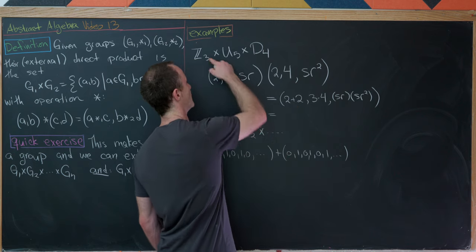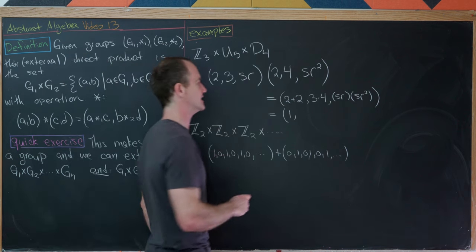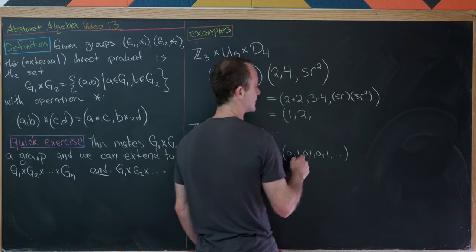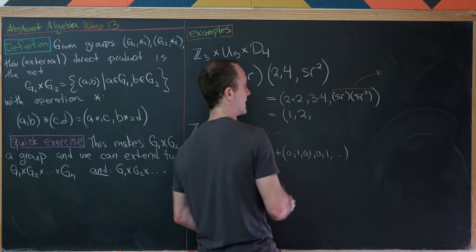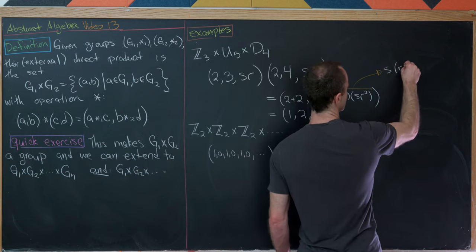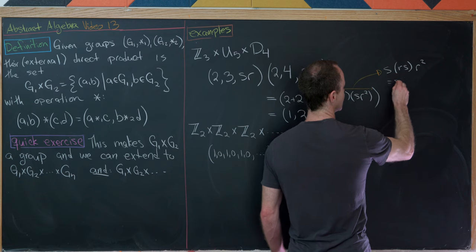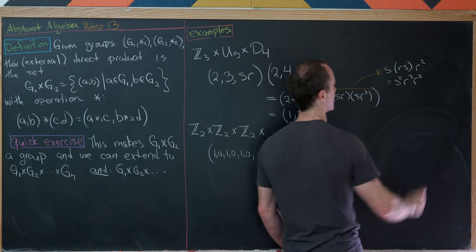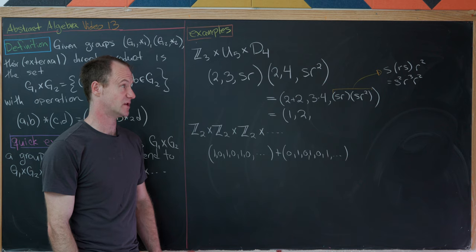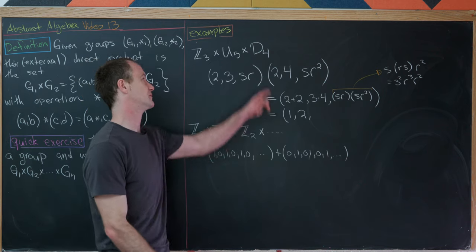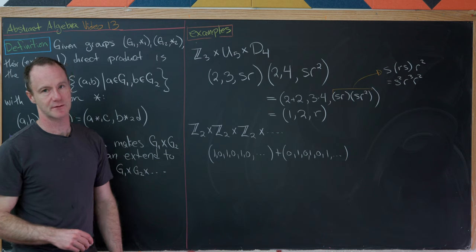Now let's simplify: 2+2 = 4, but inside Z3 that is 1. Then 3×4 = 12, but inside U5 that is 2. For the D4 entry, srsr² reassociates, and we flip r past s using the commutation rule to get s²r³r². Since s² is the identity and r³r² = r⁵ = r in D4, the result is simply r. So the final element is (1, 2, r).